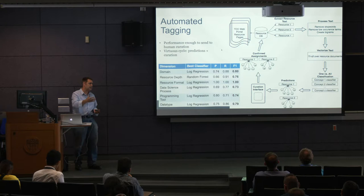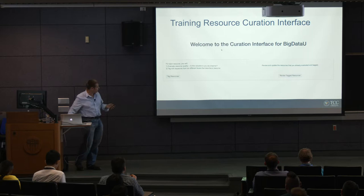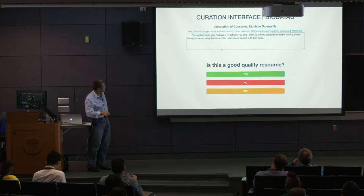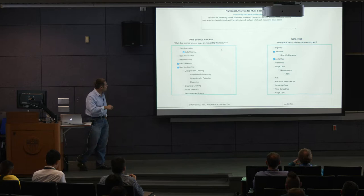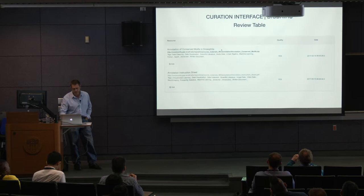For resources we think are high quality with predicted tags, we actually feed them to a human curation interface — a web-based curation interface. Curators, typically students we hired, look at a particular resource: we have the URL and a description, and they say yes or no — is it good quality? If yes, they get presented with the predicted tags. They can confirm the tags are fine, add additional tags we missed, or remove some tags. We use that feedback to retrain the algorithms — every time a human curates, we feed back into the training process.